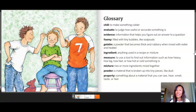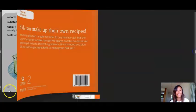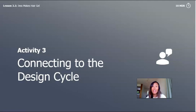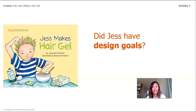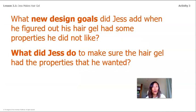The story includes a glossary of bold words with definitions. I hope you enjoyed that story. Now let's move on to Activity 3: Connecting to the Design Cycle. Did Jess have design goals? Yes — his list of properties of good hair gel were his design goals. He wanted his hair gel to make his hair look shiny and stand up in spikes. What new design goals did Jess add when he figured out his hair gel had some properties he didn't like? He wanted it to have no color and no smell.